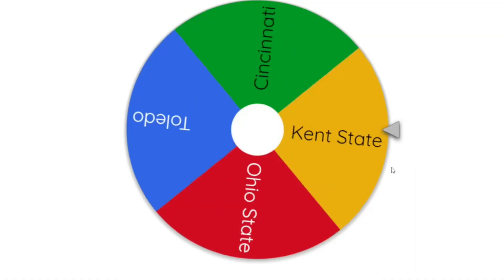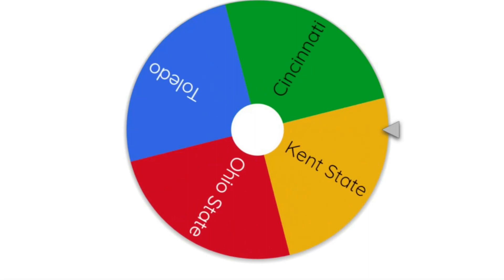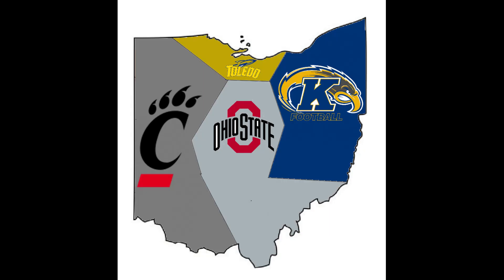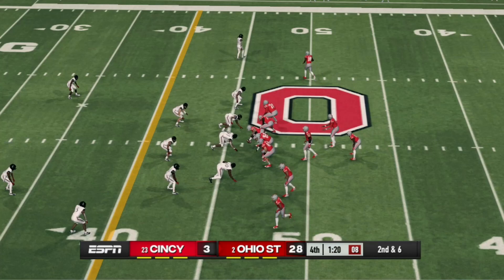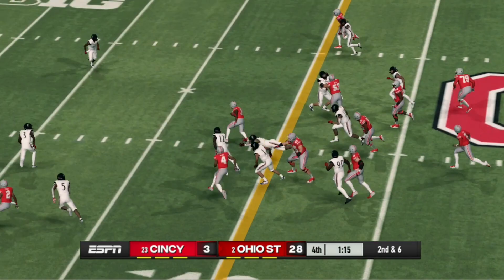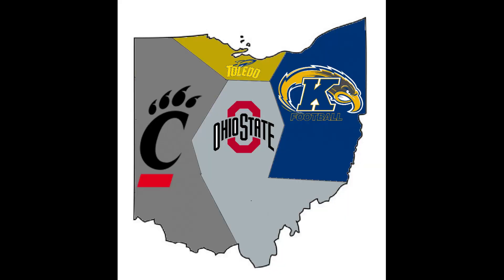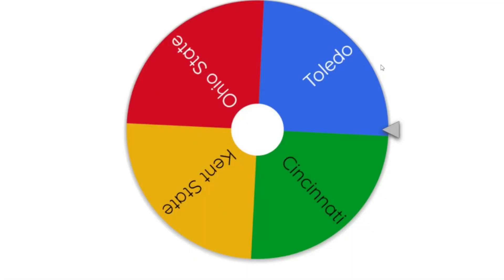There has not been a successful defense at all yet in this video. Let's see if the next one will be. The University of Cincinnati is up and they can only attack two teams — they're going into Ohio State to take on the Buckeyes. Ohio State wins 28 to 3, the first successful defense in this entire video, handedly beating the Bearcats. Cincinnati is going to have to try again another day.